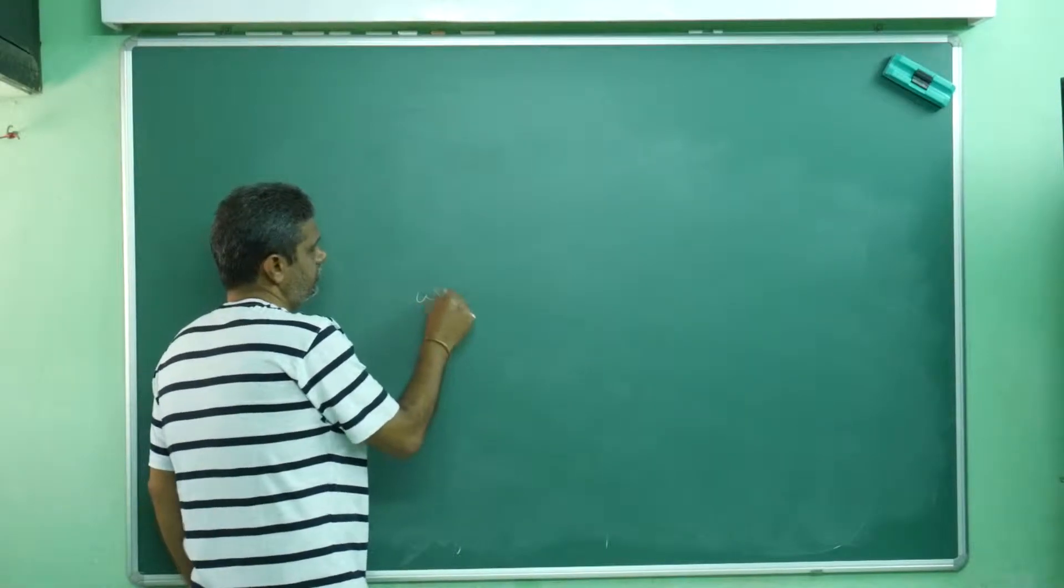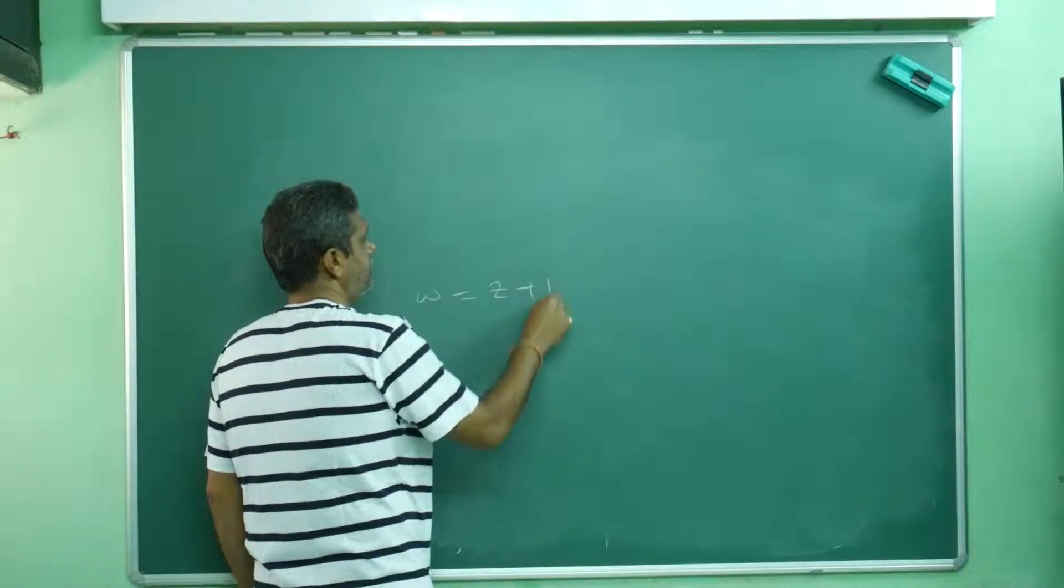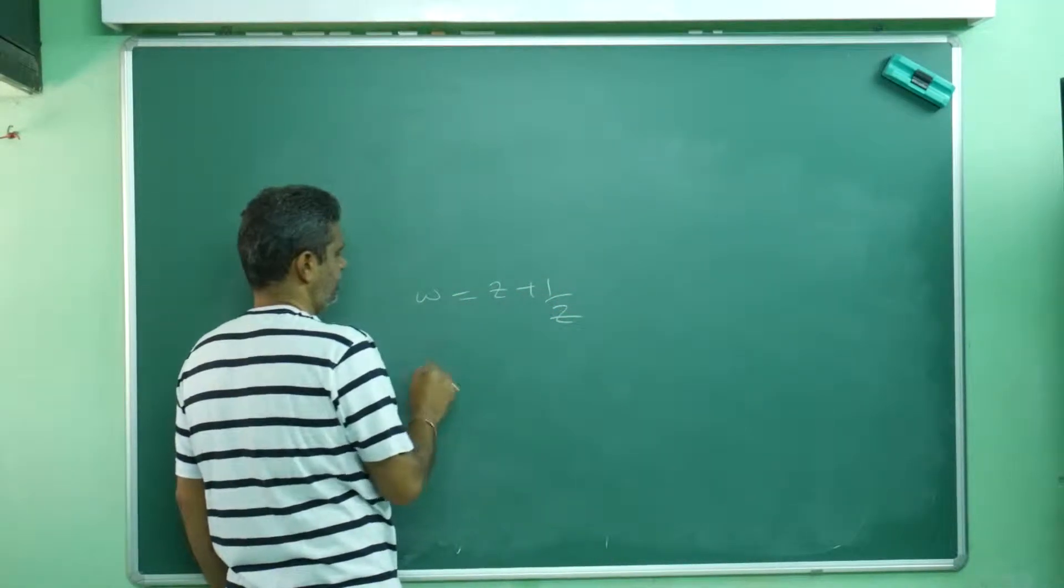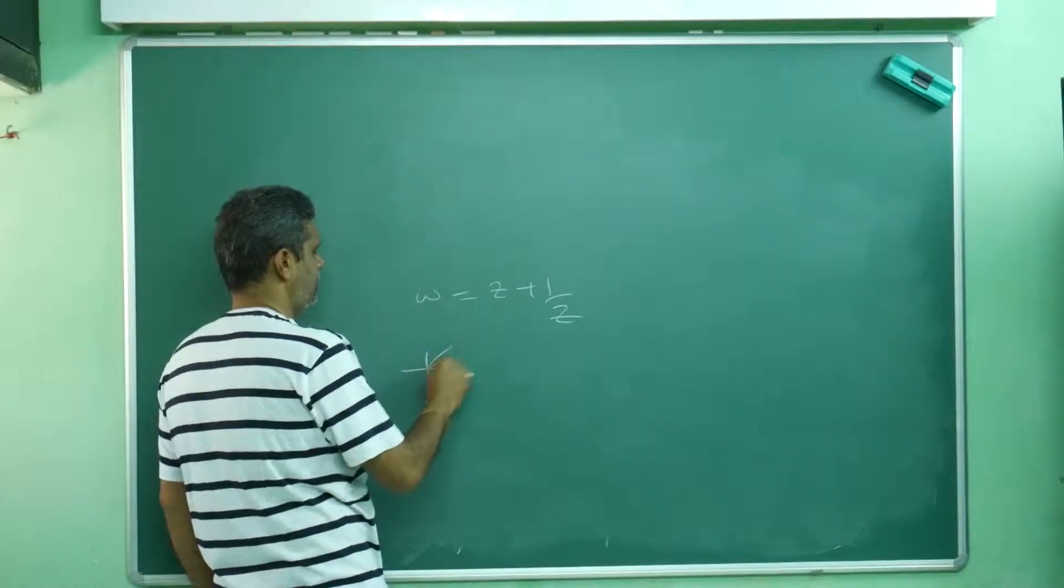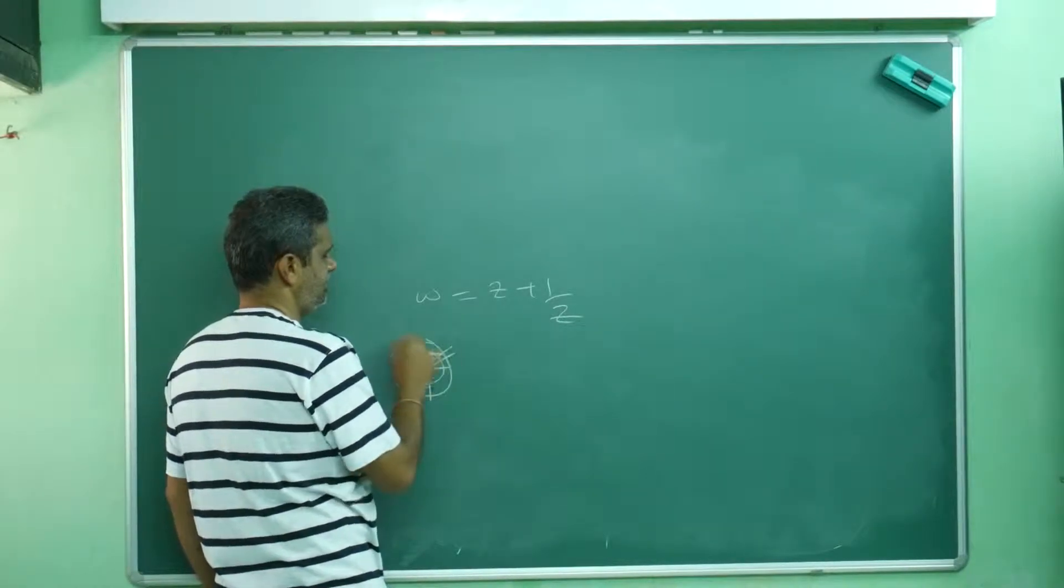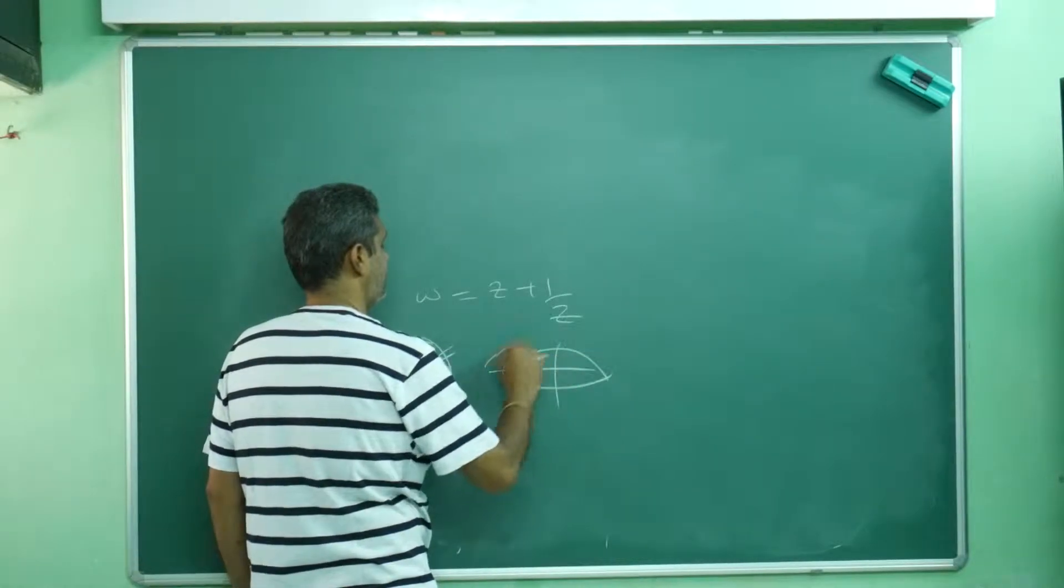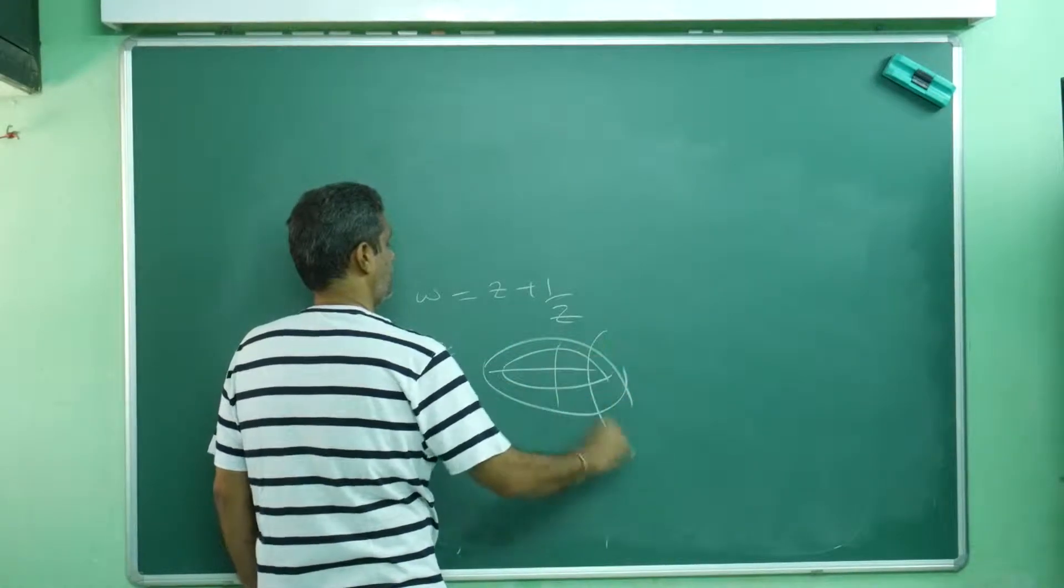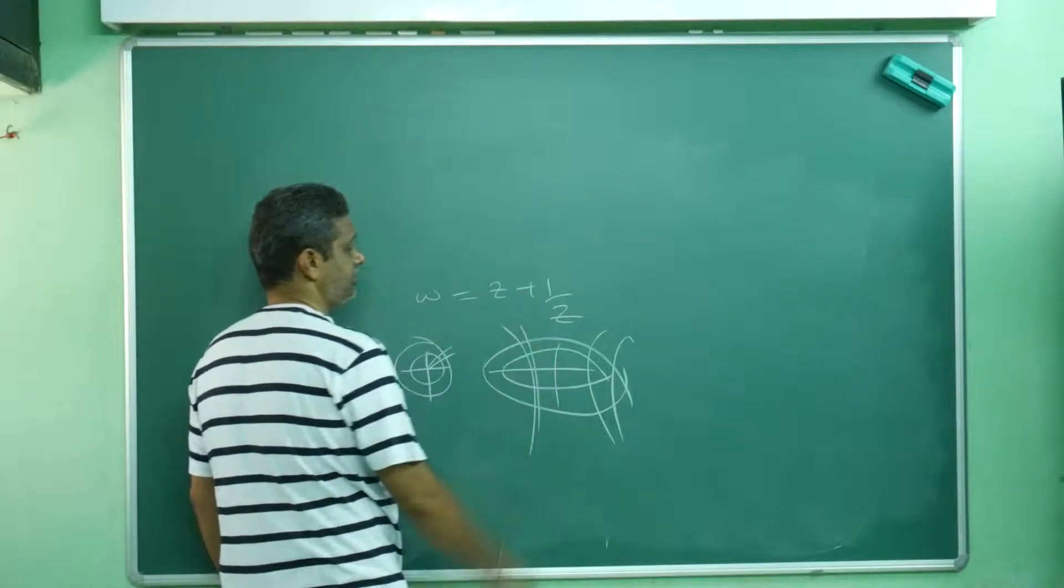But there is W equals Z plus 1 by Z. In the Z plane, two rays or concentric circles map to concentric ellipses and concentric hyperbolas, like a lot of things you will get.